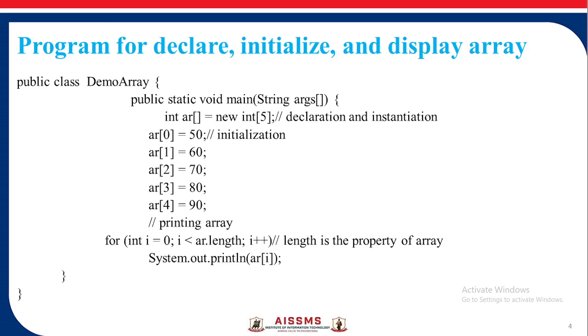These 0, 1, 2, 3, 4 represent the index at which the values are stored. Now we print the array using the for loop. So in i is equal to 0, i is less than AR dot length where length is the property of an array, i++, and it will give out the array which we have instantiated and initialized.